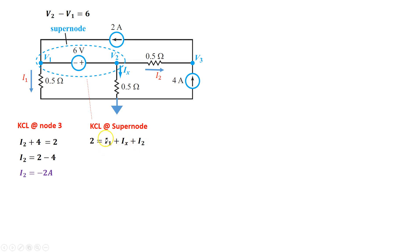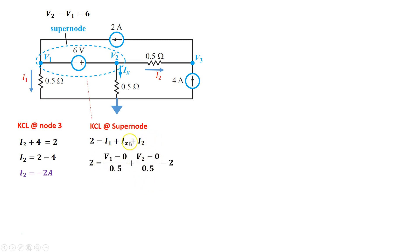Using Ohm's law, let's replace I1 and Ix. We already know I2 is negative 2A. I1 goes from V1 to the reference node through 0.5 ohms, so I1 equals V1 divided by 0.5. Ix goes from V2 to ground through 0.5 ohms, so Ix equals V2 divided by 0.5. Substituting and moving the negative 2 to the left side gives 4 equals V1/0.5 plus V2/0.5, which simplifies to V1 plus V2 equals 2.